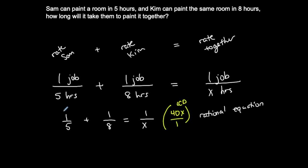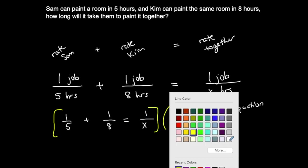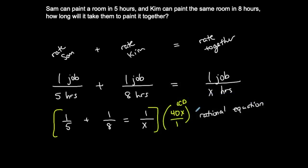So, everything in this equation is going to get multiplied by the LCD. So, I'm going to solve this the same way I did the more advanced rational equations. So, 1 fifth multiplied by this 40x. So, I'm going to leave this 1 times whatever is left when I cancel the denominator with whatever is in common in the numerator. So, the 5 is going to cancel, 5 goes into 40, and I'm left with an 8x.